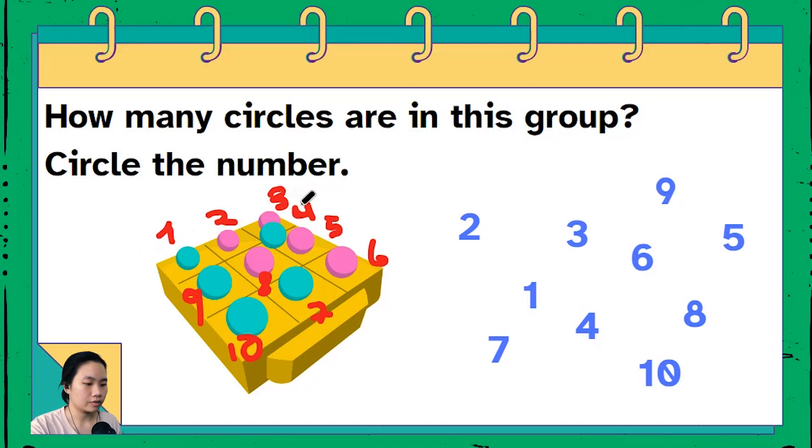One, two, three, four, five, six, seven, eight, nine, ten. There are ten circles. I'm gonna circle number ten.